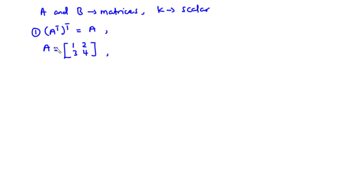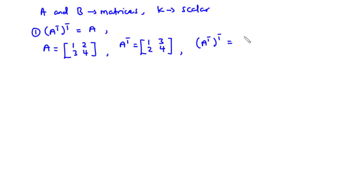Let's find the transpose of matrix A: rows become columns and columns become rows, so row 1 becomes column 1 and row 2 becomes column 2. Then let's find the transpose of that result. Again, row 1 becomes column 1 and row 2 becomes column 2. You realize that the result of this final matrix is the same as the original matrix A. Therefore, the transpose of the transpose of matrix A is matrix A itself.